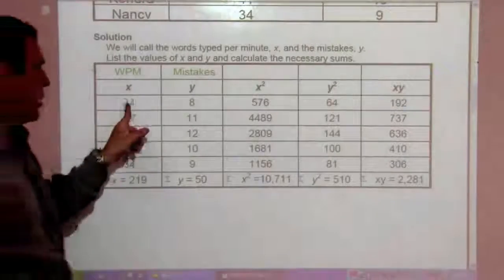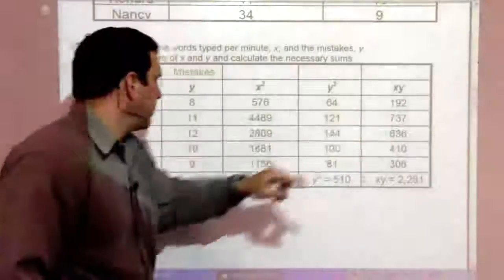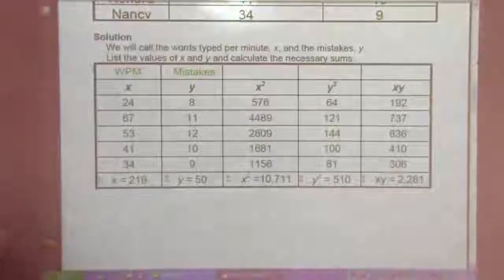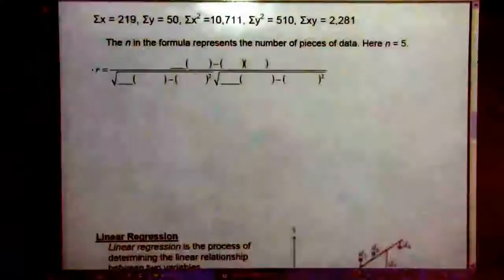So, this column represents 24 times 8, 67 times 11, 53 times 12, and so on.